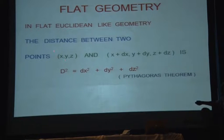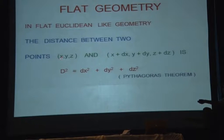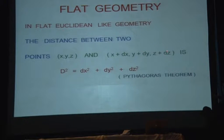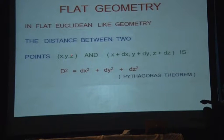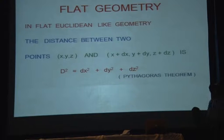Consider two points: if there are two points with coordinates x, y, z and x+dx, y+dy, z+dz, then coordinate geometry tells you the distance between them is dx² + dy² + dz², which is essentially the Pythagorean theorem.